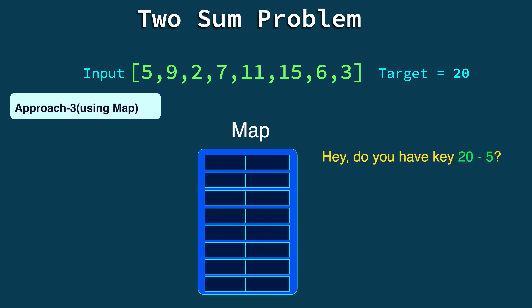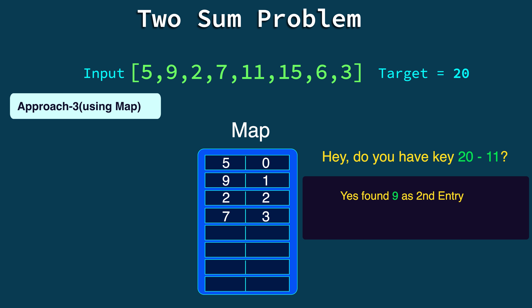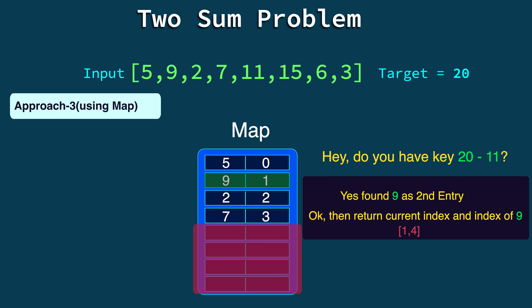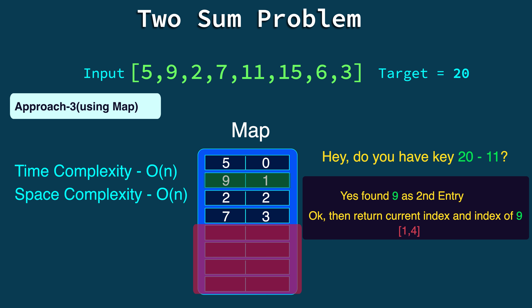In the dry run: starting with an empty map, we take element 5 and ask the map for its complement (20 − 5 = 15). The map has no entries yet, so we insert 5 with its index. This search-and-insert process continues for each element. When we reach element 11 at index 4, the map replies that 9 (the complement) exists as an entry. We immediately return the indices of 9 and 11 — that is, index 1 and index 4. The time complexity for this solution is O(n), with extra space used for the map.